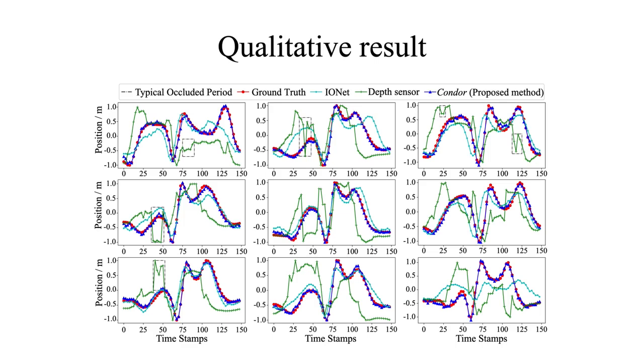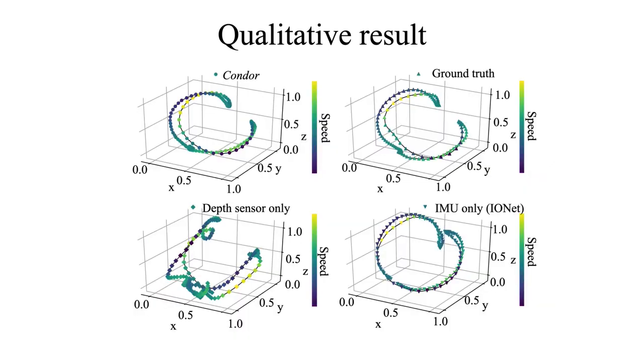Here are some qualitative results. We see that for Kinect only, there are many typical occluded parts. For IONet, which is the IMU-based deep neural network, we see that in many stages, it still does not recover the whole swing tracking. Simply using the depth sensor, as we discussed, it has many occluded phases. Our proposed method is very close to the ground truth after training. Here are also some qualitative results for the whole swing. We see that the proposed method is very close to the ground truth. Simply using IMU suffers from accumulated error, especially in two stages at the top of swing and finish. The depth sensor suffers from occlusion.